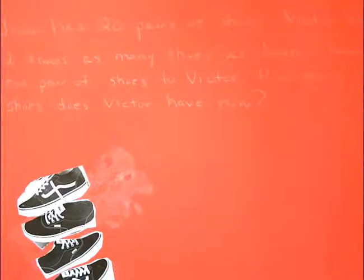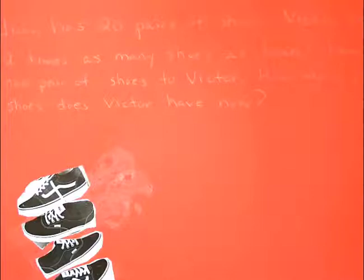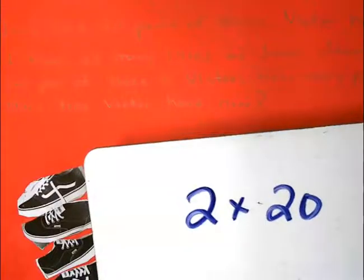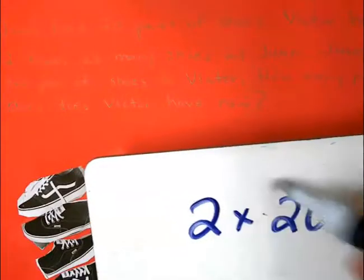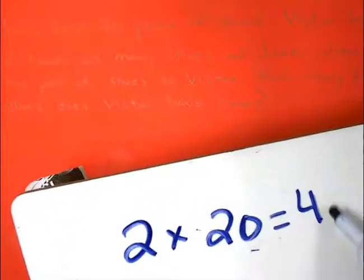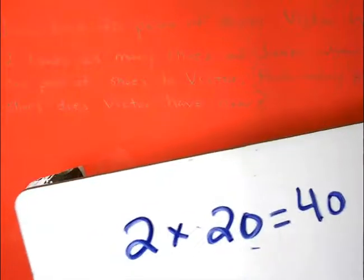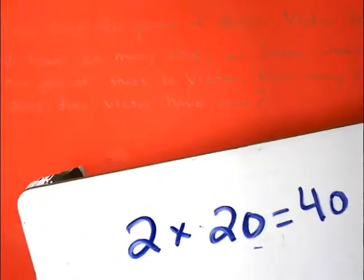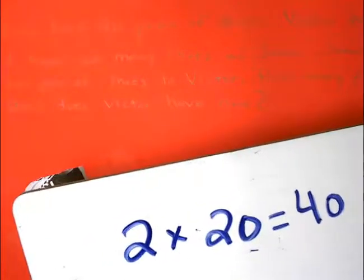Okay, so Juan has 20 pairs of shoes, but Victor has two times as many. What's two times 20? Well, two times two is four, and we have one trailing zero. So twice as many would be 40 pairs of shoes.